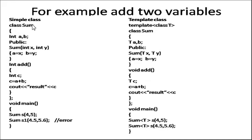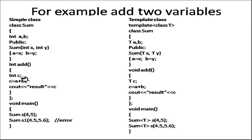Here is an example of a simple class, as we have already done: class Sum with int a, b. In the public section, there is a constructor containing two parameters. Then a = x, b = y, and there is a function 'add' where we are declaring a variable c equal to a plus b and printing the result.